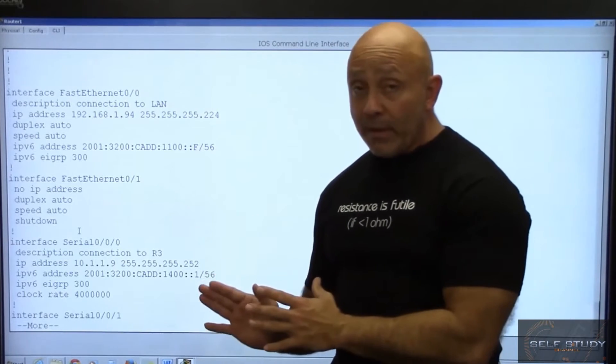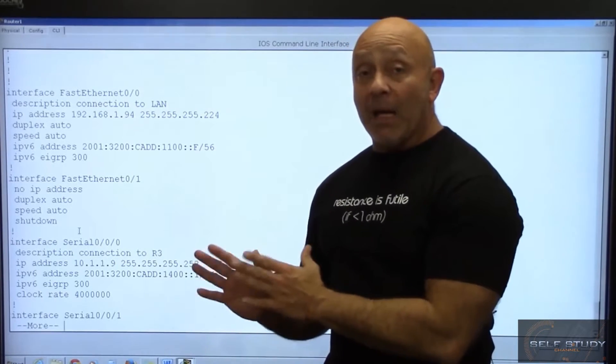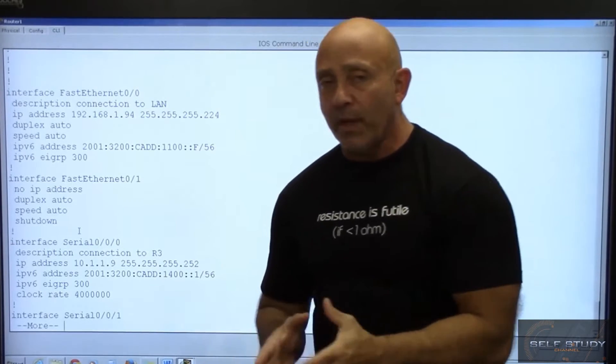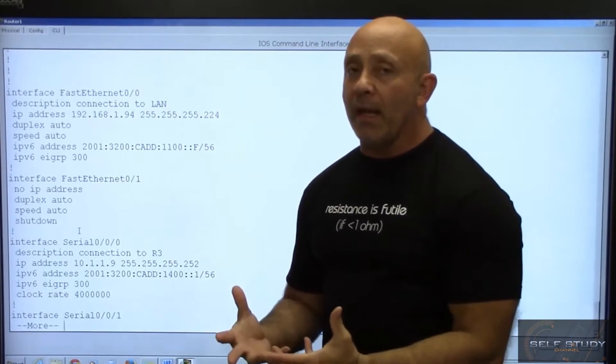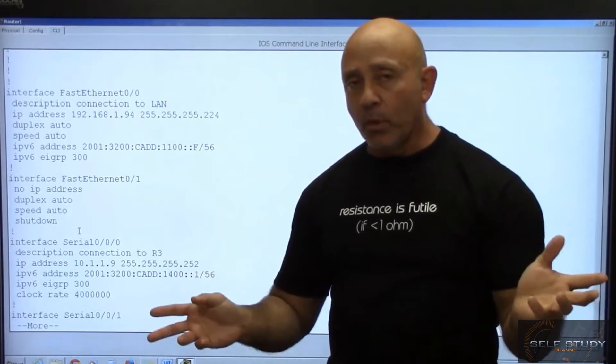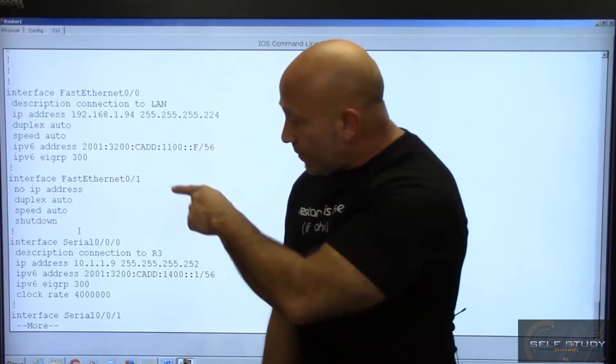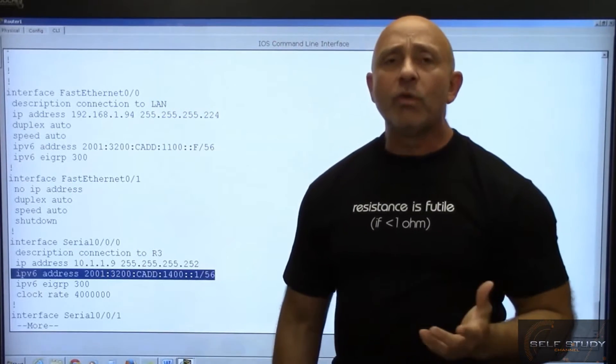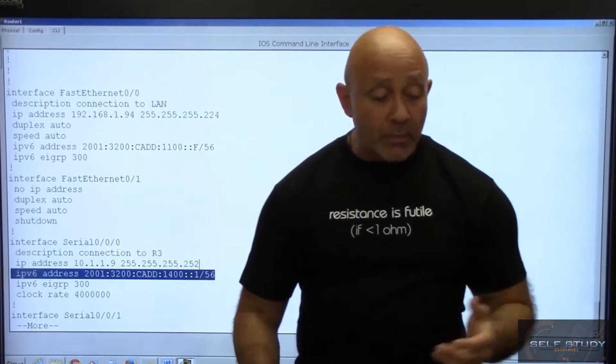You need to have a router ID which is an instance for that protocol and you do need to turn on the protocol. Other than that, everything is done. This is how you enable that interface to use EIGRP. Very simple.